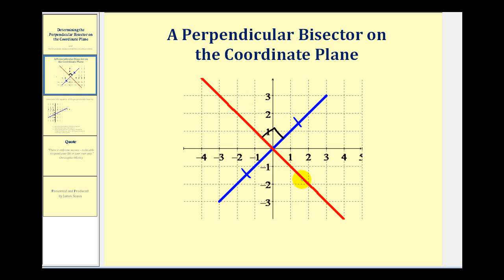The goal of this video is to determine the equation of the red perpendicular bisector given a segment on the coordinate plane. To do this, there are two main things we have to do. Number one, if we determine the midpoint of the segment, it will give us one point on the perpendicular bisector. The second thing to remember is that if two lines are perpendicular, their slopes are negative reciprocals.